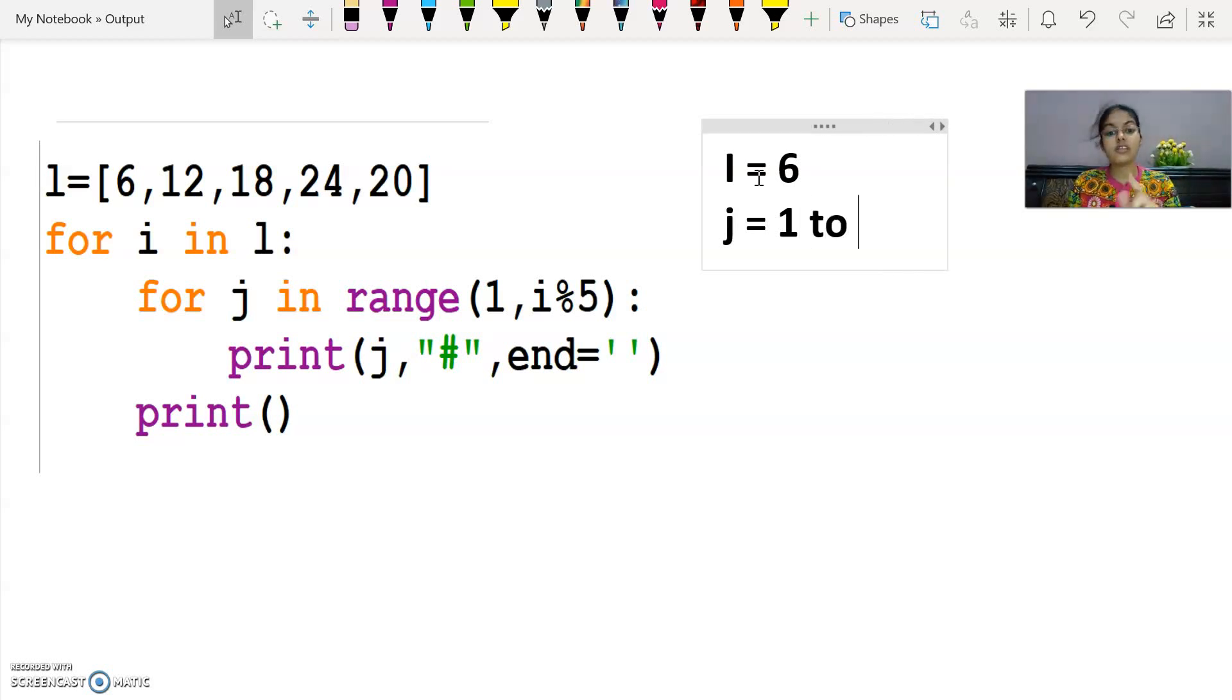Till the end. Now i modulus 5. What is i's value? Let me write it here. i's value is 6. 6 modulus 5. When I divide 6 by 5, what remainder will come? 1. 5 ones are 5, so what remainder will come? 1. And 1 minus 1, that is 0. So can my loop execute from 1 to 0? No. Okay, my forward step value is 1 by default. So when i's value is 6, in that case my loop will not execute.